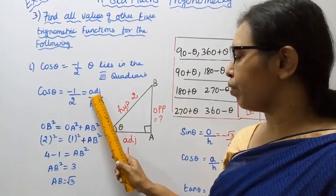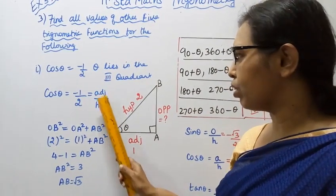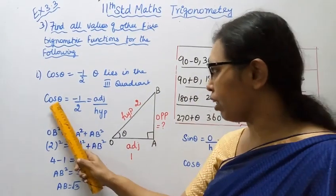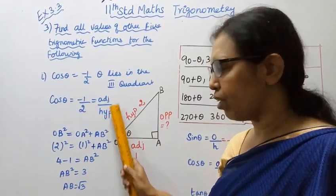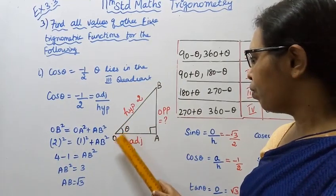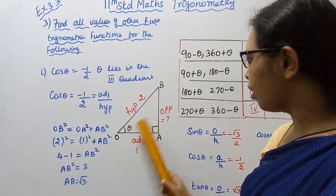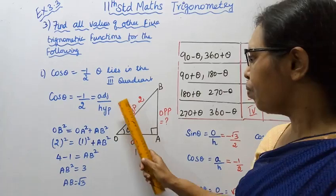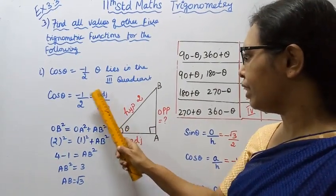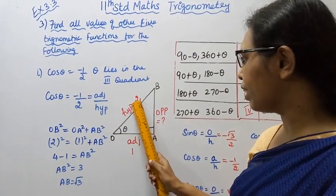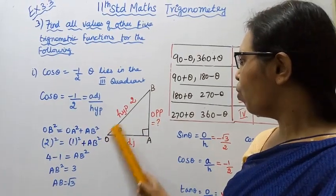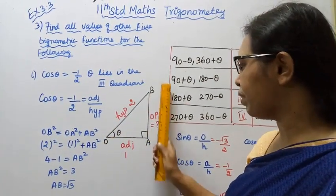Cos theta equals adjacent by hypotenuse. Using the diagram with triangle OAB and angle theta, adjacent equals 1 and hypotenuse equals 2. We need to find the opposite side using the Pythagoras theorem.